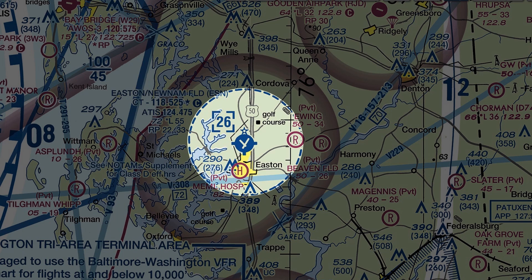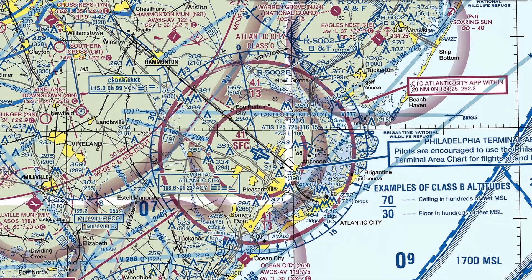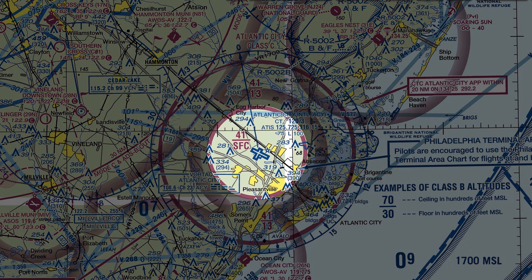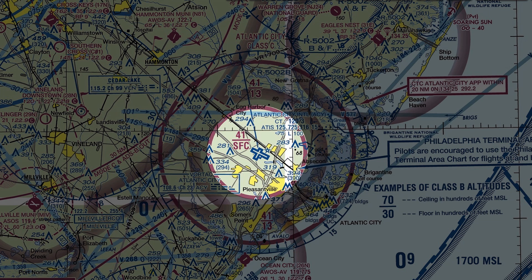This changes at airports that have more traffic congestion. Atlantic City International is a Charlie airport. It's also towered, and the tower generally has responsibility for the area in the inner circle — the surface area of the Charlie. Within this area, ground and tower controllers operate much the same as they do at Class D Easton.